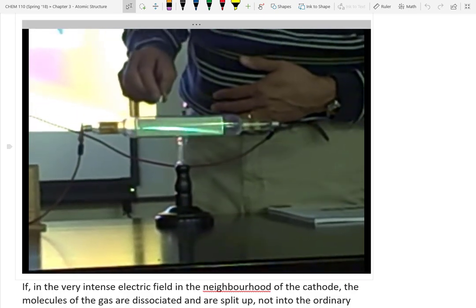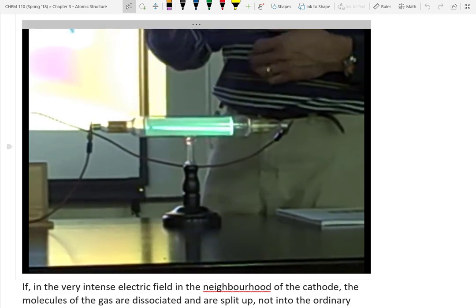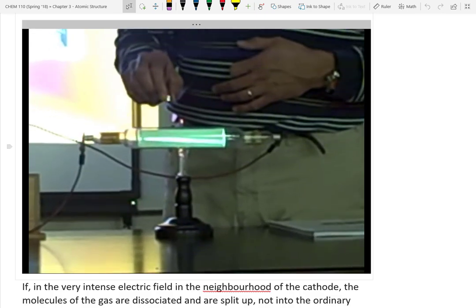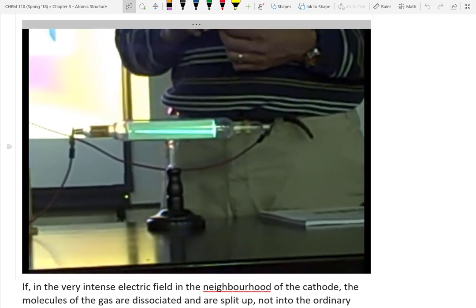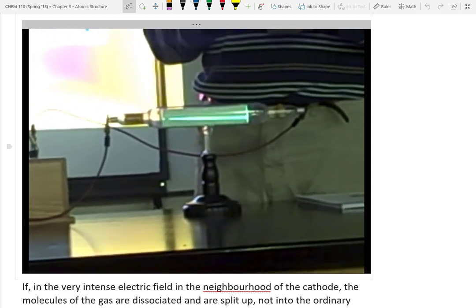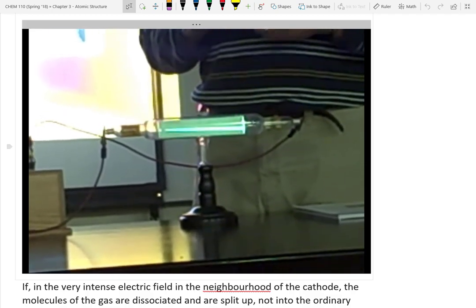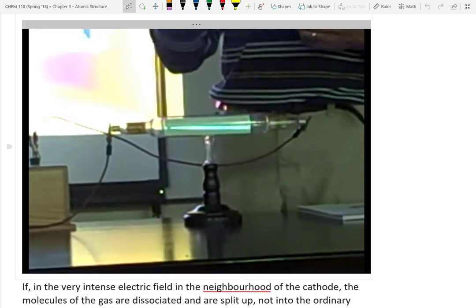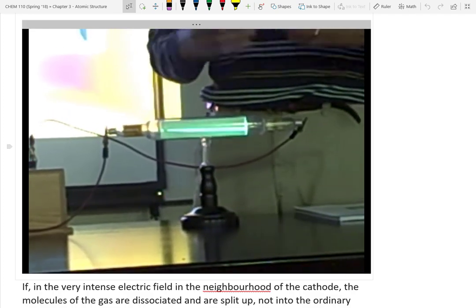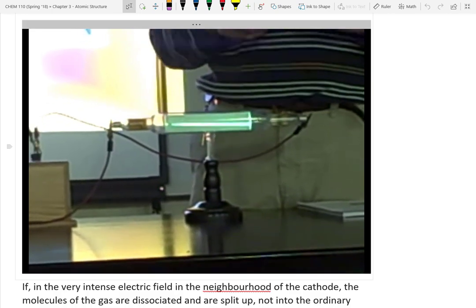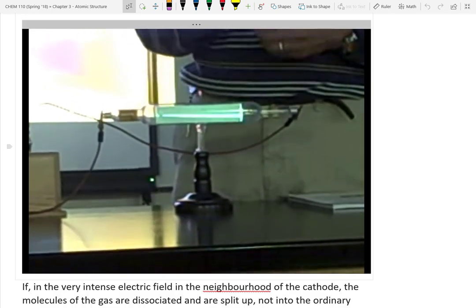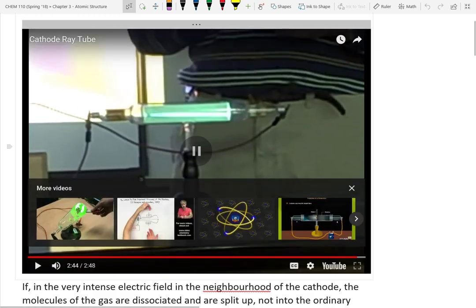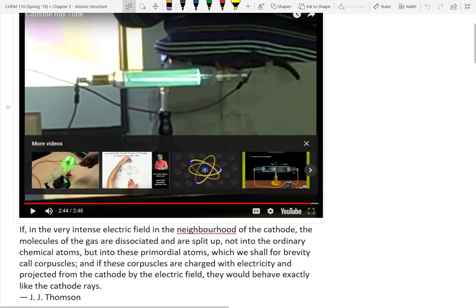That beam has a charge. The negative pole pushed it away, which told Thomson the particles must also have a negative charge. He was able to do a charge-to-mass ratio and found these particles were about 2,000 times lighter than a hydrogen atom. That was very profound — hydrogen is the smallest atom, so finding something 2,000 times smaller meant they had found the first subatomic particle.